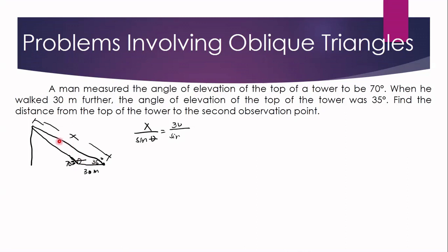Let the angle opposite the 30-meter side be beta, so we have 30 over sine beta. To get the value of angle theta, notice that 70 degrees and theta form a linear pair because they form a straight line. So theta equals 180 minus 70, which means theta is actually 110 degrees.